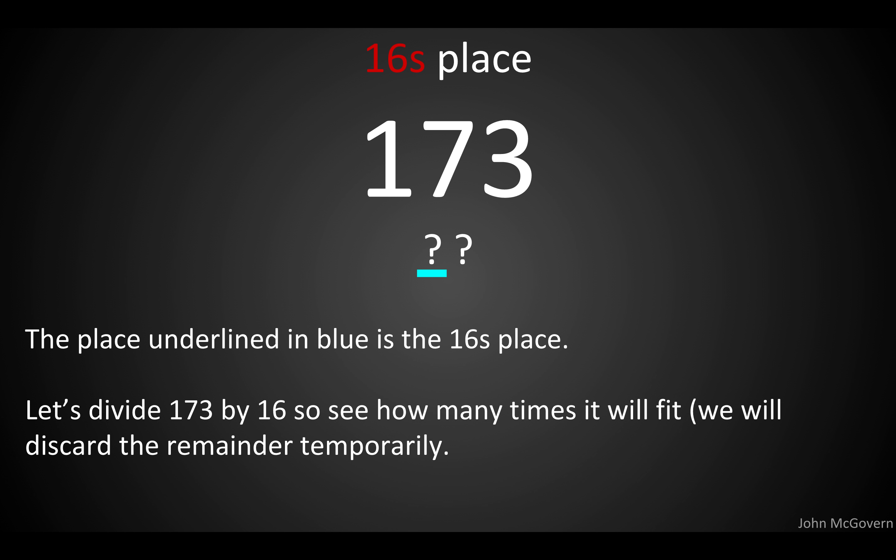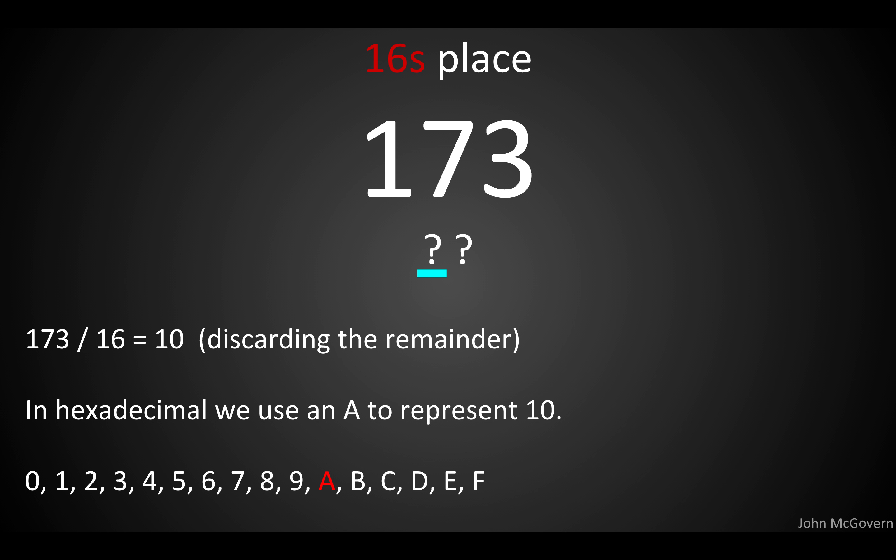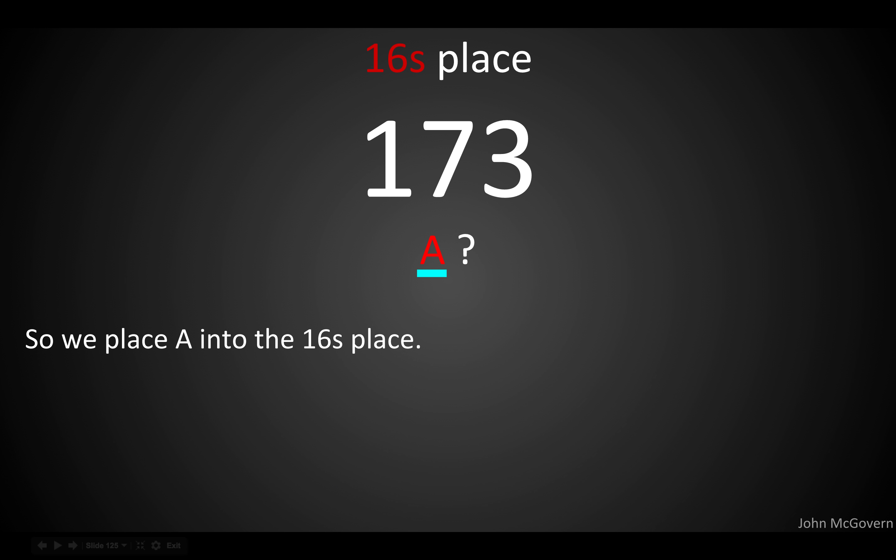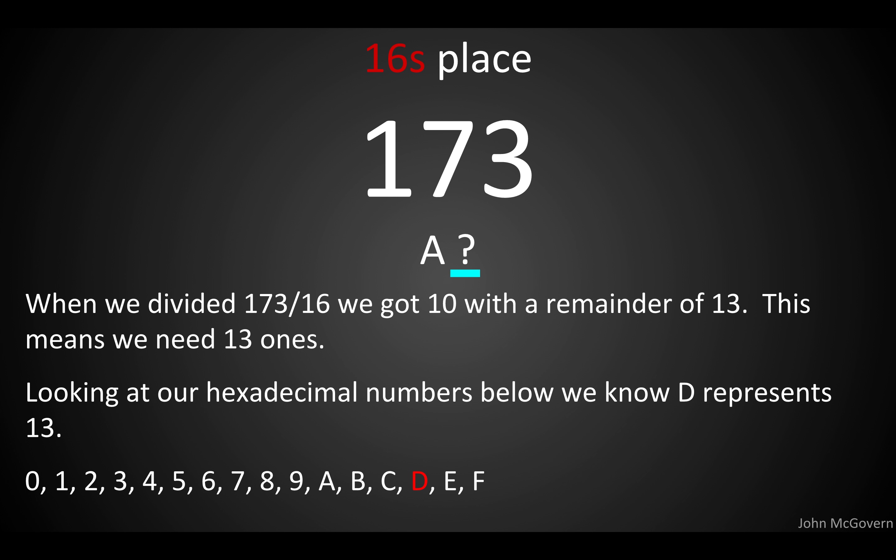So, let's divide 173 by 16 to see how many times 16 will fit into 173. And for the time being, we'll discard the remainder. We're going to put it aside. So, 173 by 16 is 10. Again, discarding the remainder. So, in hexadecimal, we have 0, 1, 2, 3, 4, 5, 6, 7, 8, 9. And then, A represents 10. So, we're going to slot A into the 16's place. We need 10 16's. 10 times 16 equals 160. So, when we divided 173 by 16, we got 10. And we had a remainder. We had leftovers of 13. So, this means we need 13 in the 1's place, right here.